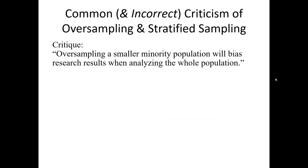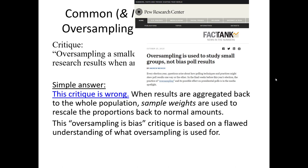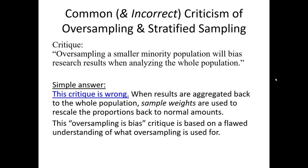When people are introduced to stratified sampling, specifically the act of oversampling relatively low percentage groups, a common critique is that oversampling a smaller minority population will bias research results when analyzing the whole population. Simply put, this critique is entirely baseless and wrong. That's because we purposefully oversampled a particular minority population. If we intend to merge the results back and do aggregate analysis, we would readjust the weight of that oversampled group — weighing them back down again — so that our proportions are adjusted appropriately when we conduct analysis on the whole population.